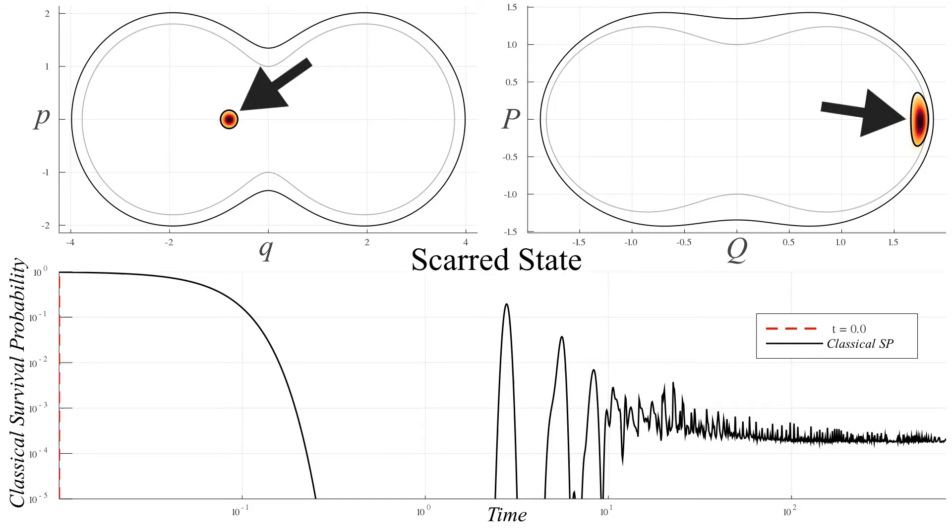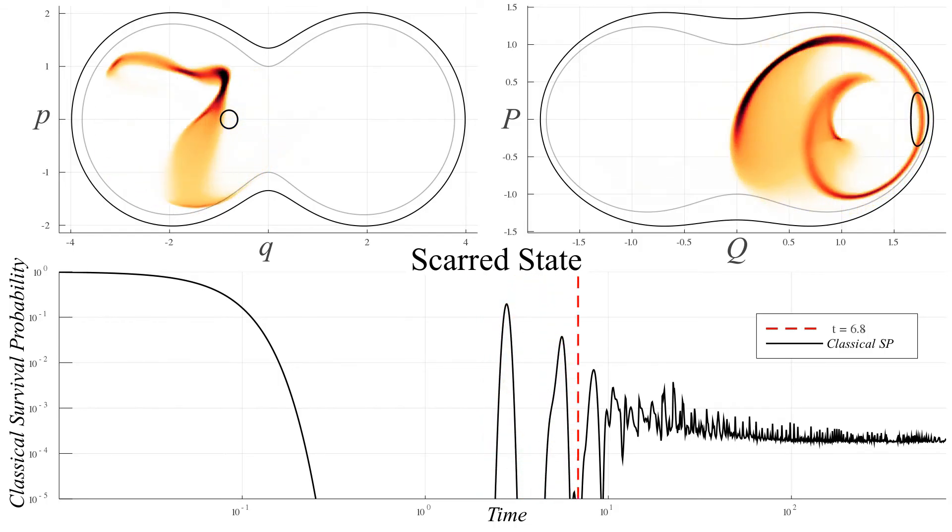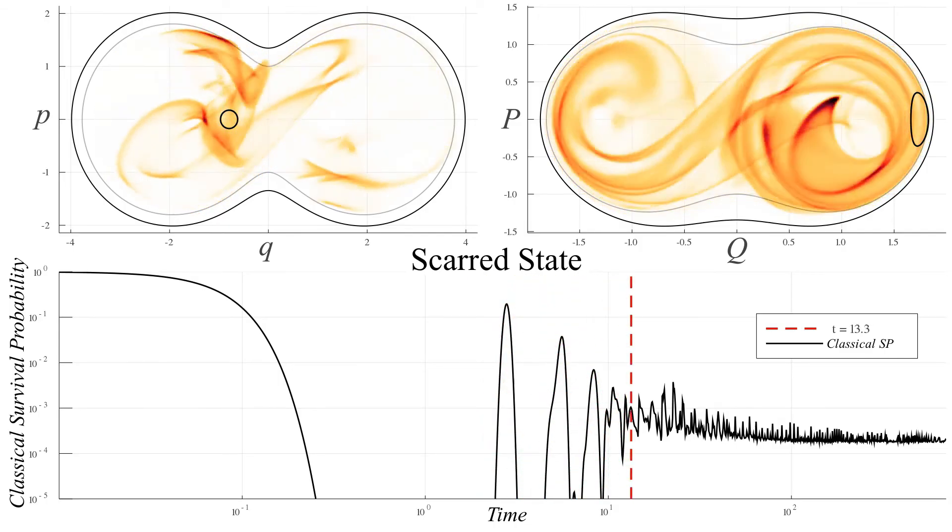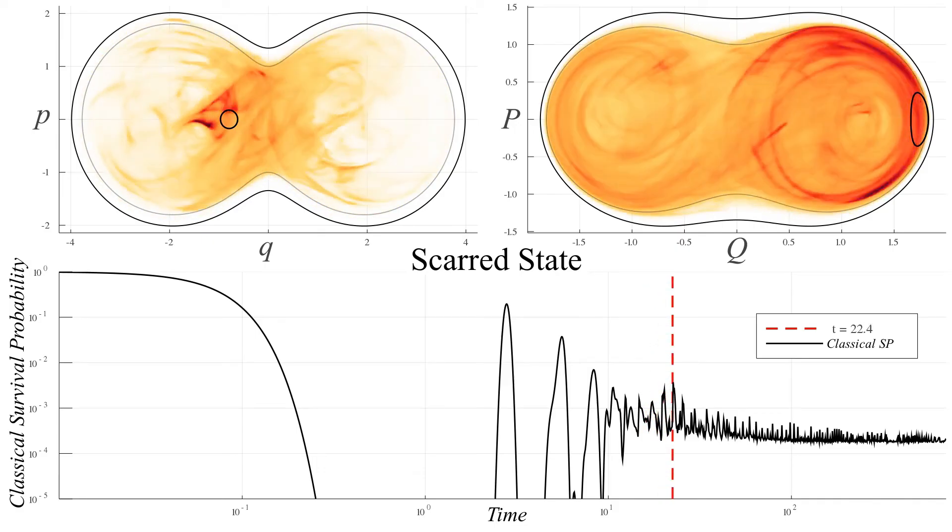Let's see the consequence of that pattern in the classical dynamics. We plot the classical survival probability in the bottom panel which, remember, measures the amount of color inside of the initial region. As in the previous cases, the ensemble moves away from the initial region as a whole.